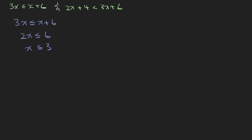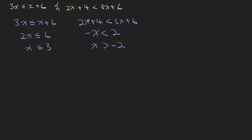Now we look at the other inequality: 2x plus 4 is less than 3x plus 6. Shift the 3x to the left side, you have minus x. Shift the 4 to the other side, you will have 2. So x is greater than minus 2. Remember that you have to flip the sign. Now you know that x must satisfy both conditions: x must be less than or equals to 3, and at the same time x must be greater than negative 2.